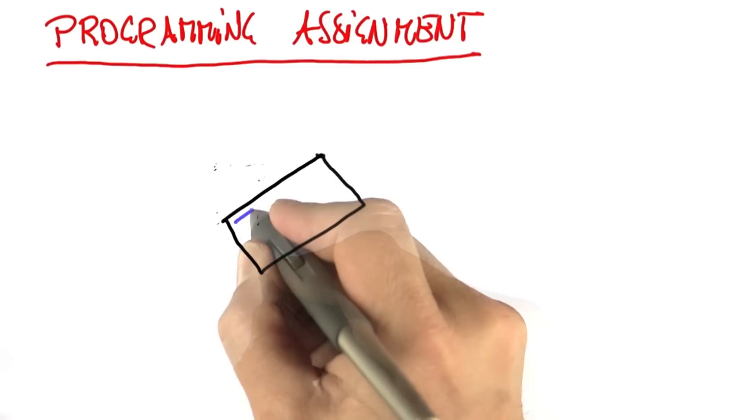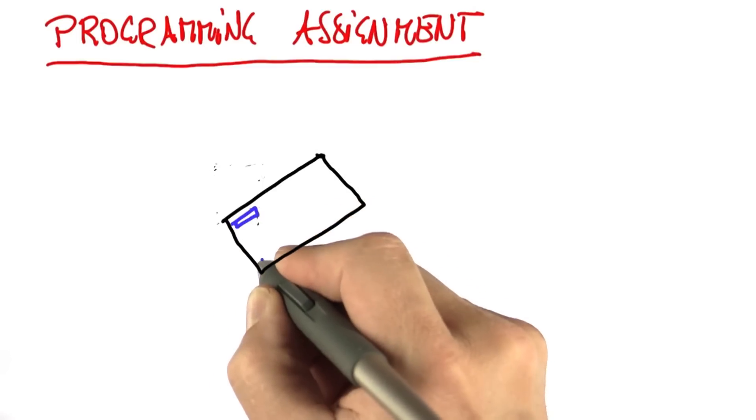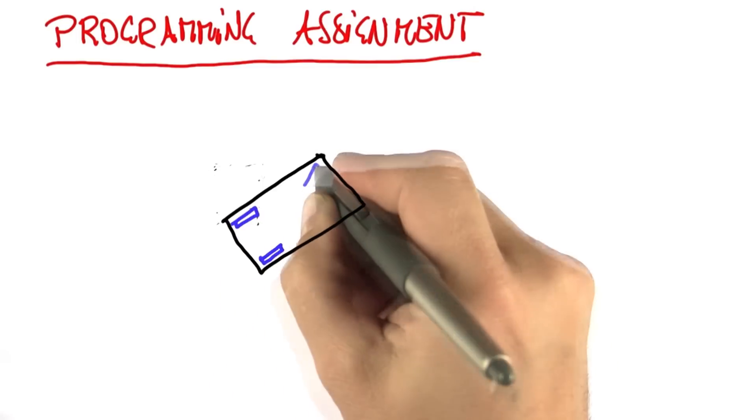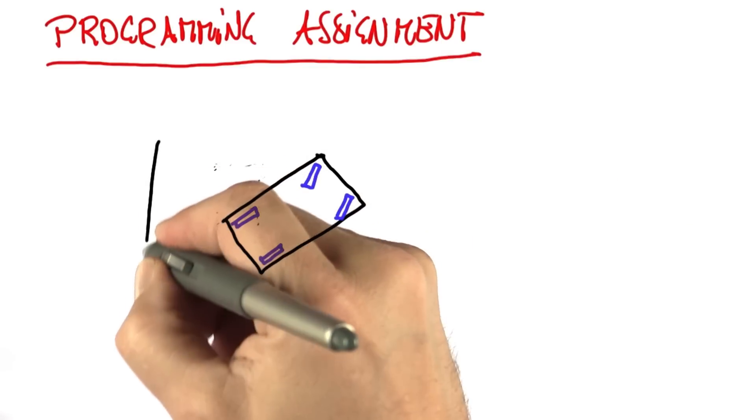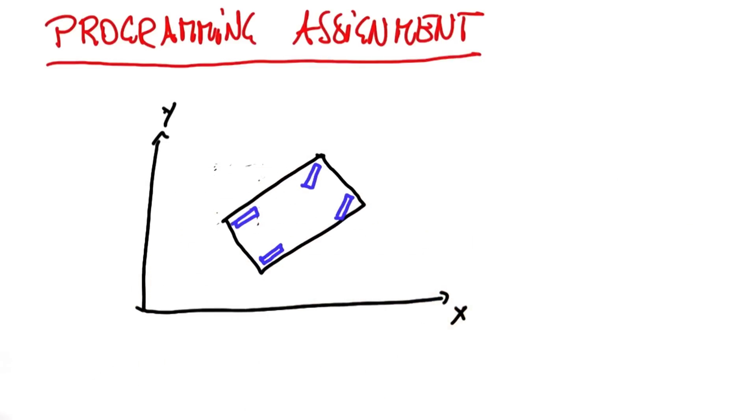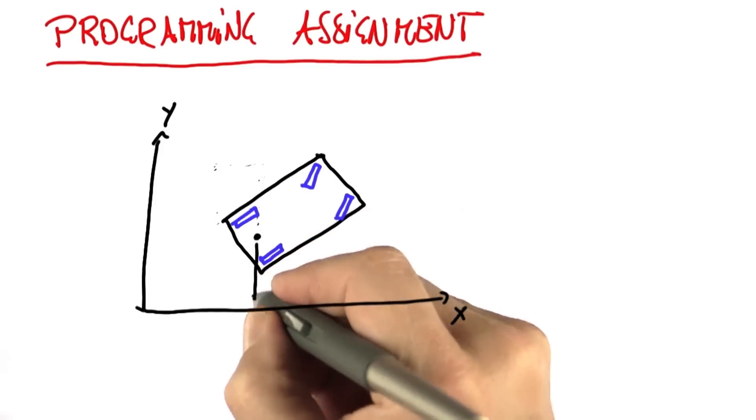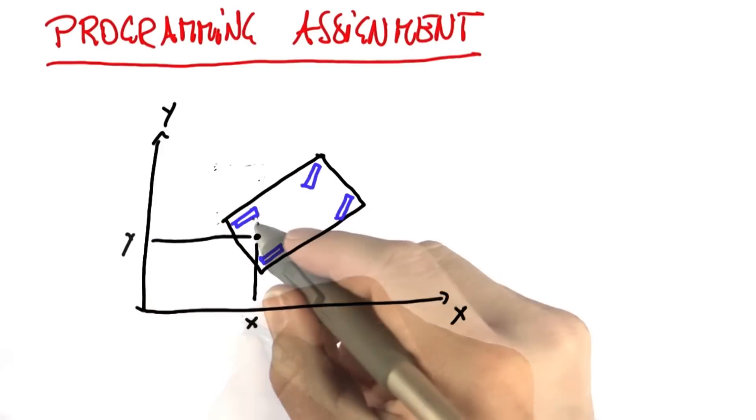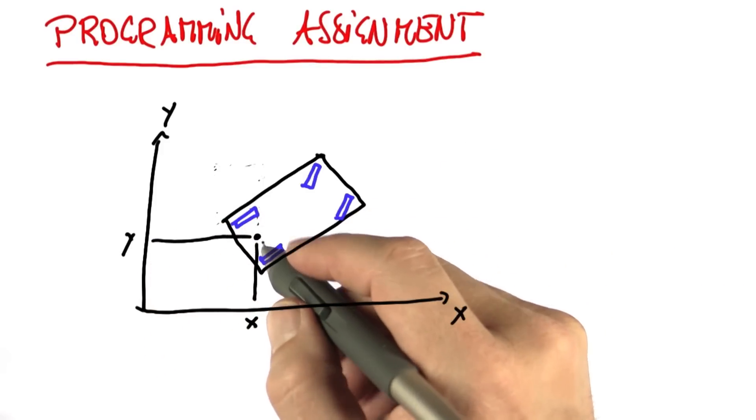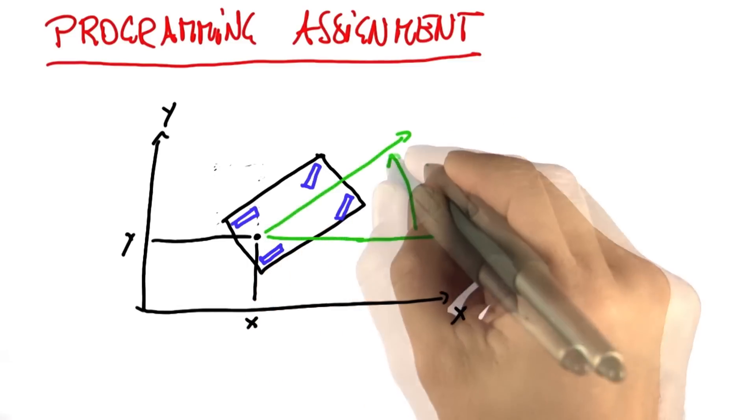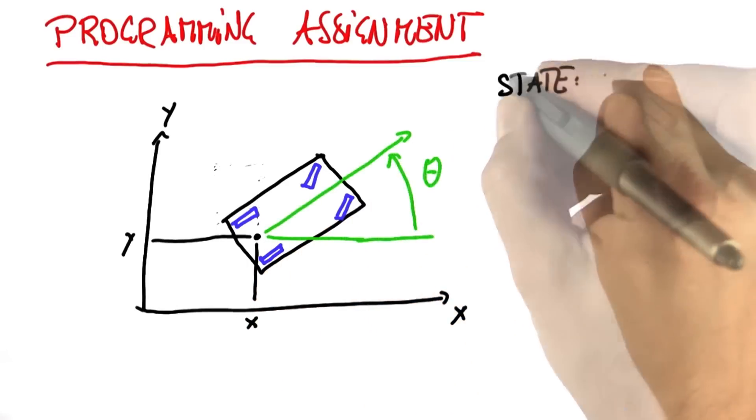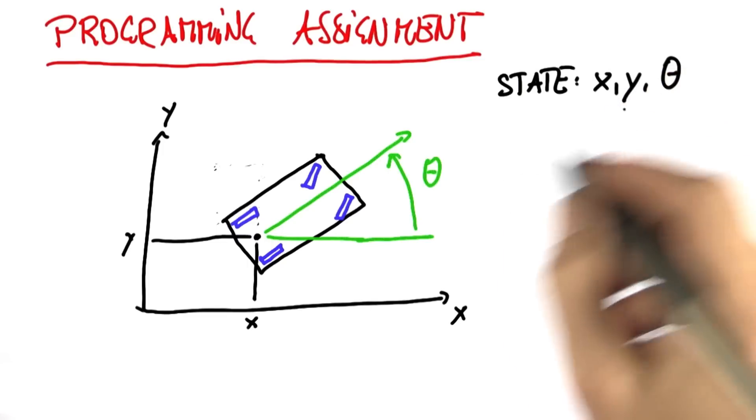So here's a car. A car tends to have two fixed tires and two steerable tires in the front. Suppose the location of our car in a coordinate system is given by its x-coordinate and its y-coordinate, and I'm picking the halfway point on the rear axle as the reference point, and by its heading direction theta. So the state will be x, y, and the orientation theta.